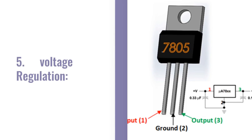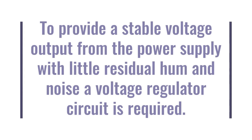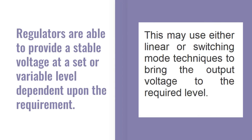5. Voltage regulation. Even after the rectified voltage has been smoothed, there may still be significant levels of residual hum. Also the voltage will vary as different levels of current are drawn. To provide a stable voltage output from the power supply with little residual hum and noise, a voltage regulator circuit is required. Regulators are able to provide a stable voltage at a set or variable level dependent upon the requirement, using either linear or switching mode techniques.